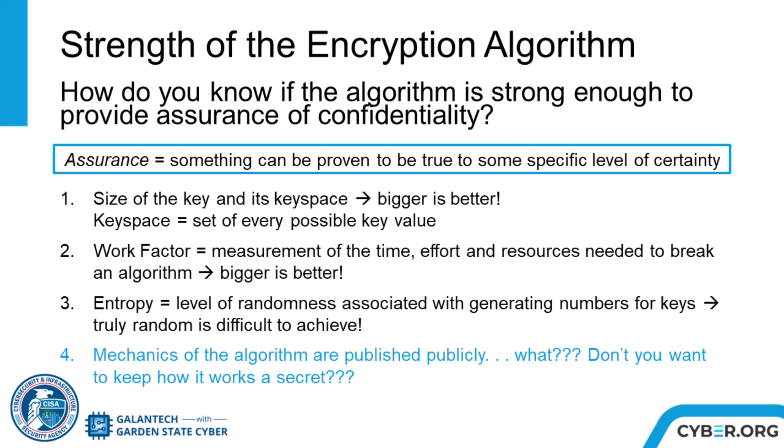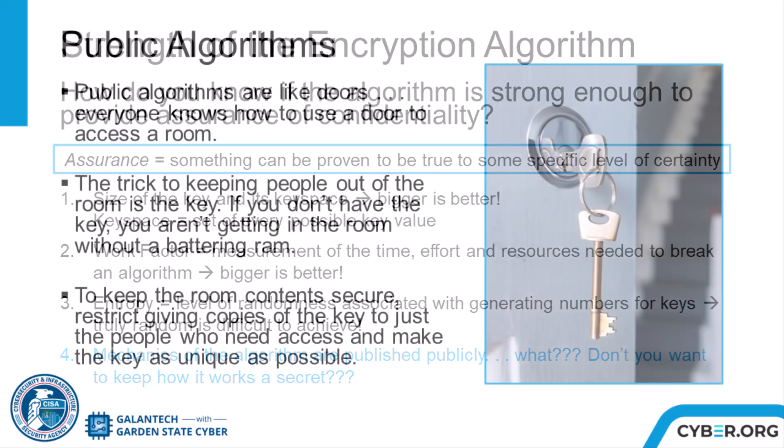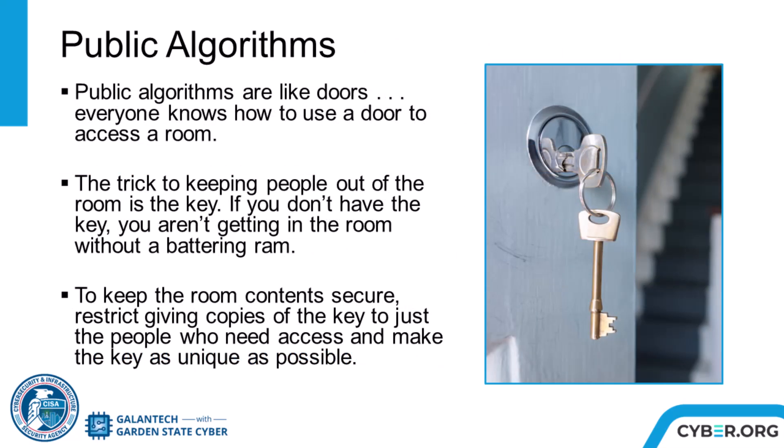This last concept — that the mechanics of the algorithm are published publicly — is not intuitive, but it is very important. The terms public, private, and secret are used a lot with cryptography. In this case, a public algorithm means that the workings have been openly published for anyone to see, as opposed to proprietary algorithms, which are kept secret by the creators and rely to some extent on that secrecy to provide security. Public algorithms are like doors — everyone knows how to use a door to access a room.